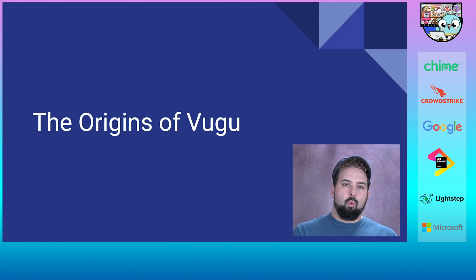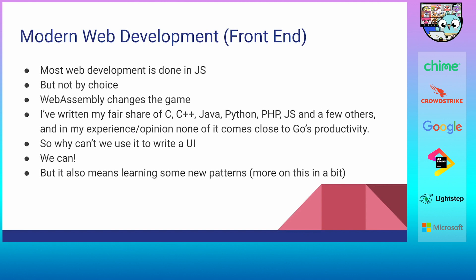When we look at the origins of VUGU, we're really talking about what technology VUGU uses and some background to put it in context. If we talk about modern web development, specifically user interfaces that run in the browser, those are written in JavaScript. However, it's not necessarily because JavaScript is the best solution — it's the solution that's been working. JavaScript is chosen by necessity, not necessarily by choice.